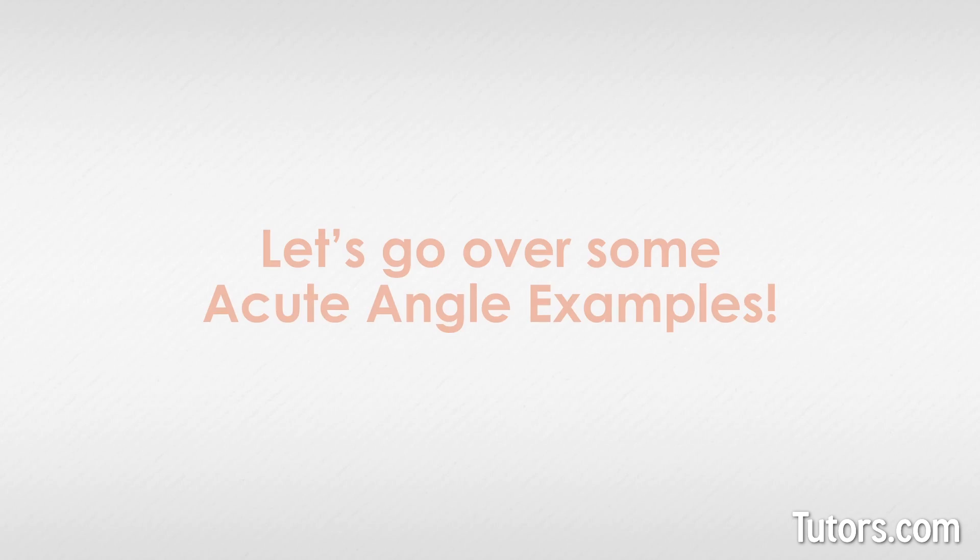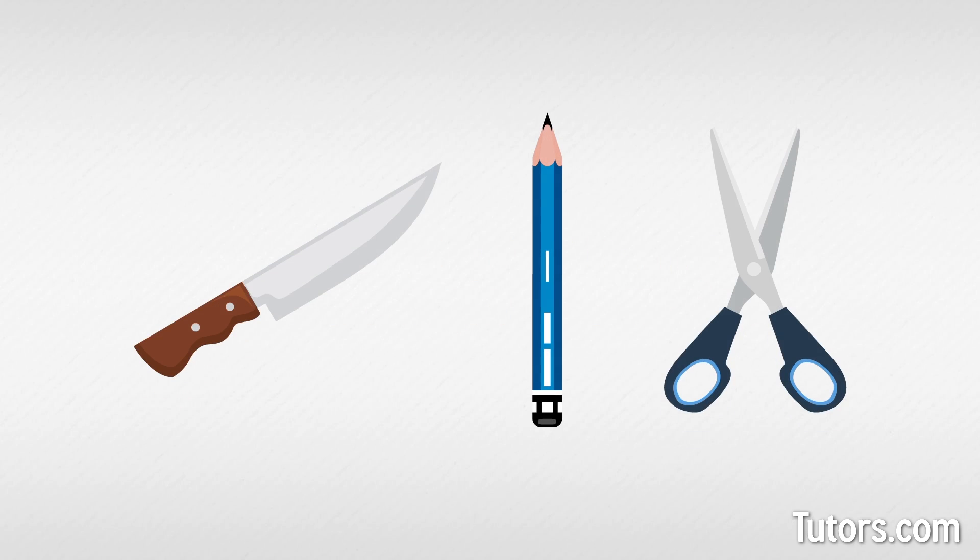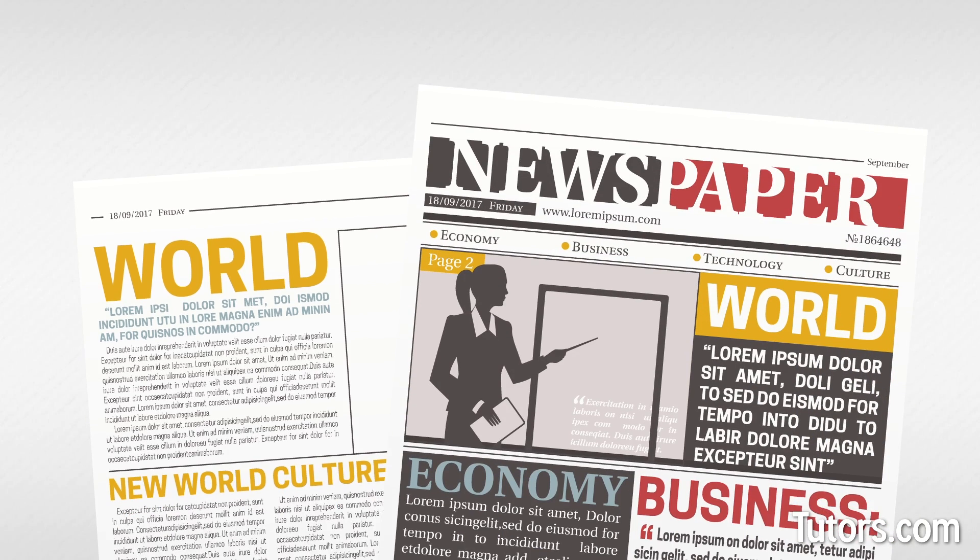Examples of acute angles in real life are all around you. Acute angle things are sharp. The sharp edge of a knife is an acute angle. A sharpened wood pencil has an acute end, and so does a pair of scissors. You use angles in everyday life. Even the words you see in print are full of acute angles.